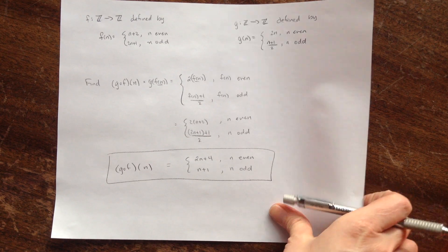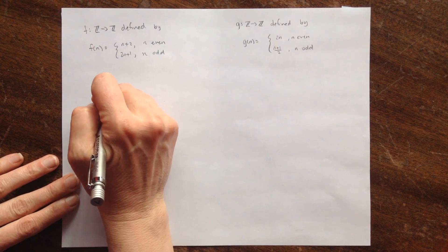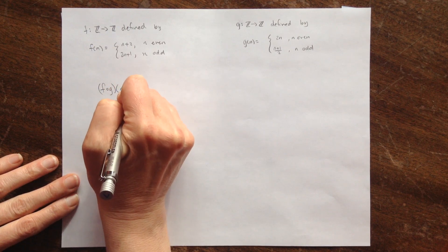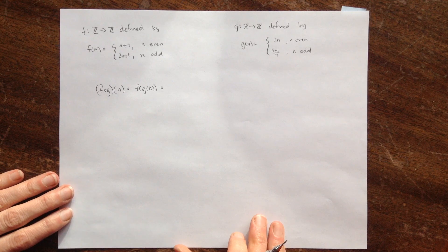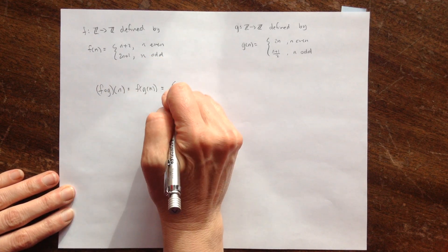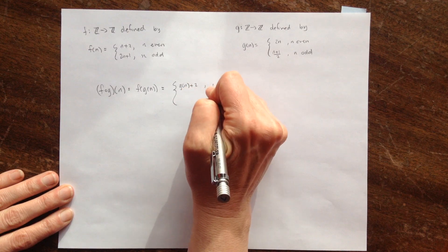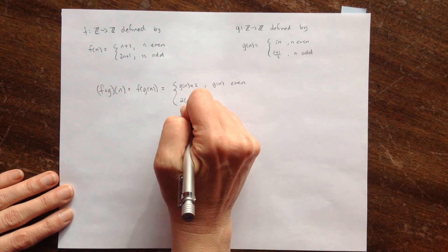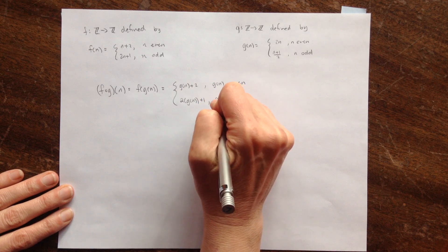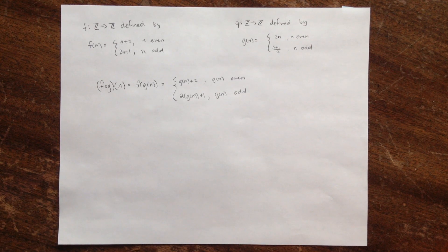Now let's compose these two functions in the other order. We did g of f — now let's do f of g of n. I'm going to plug g of n into f. What f tells me to do is take what I'm plugging in and add 2 if that thing — g of n — is even. Or take 2 times what I'm plugging in plus 1 if g of n is odd.